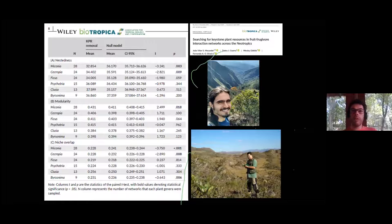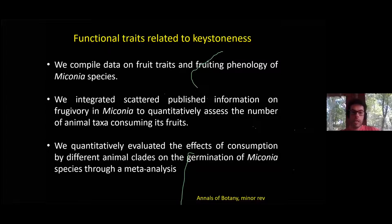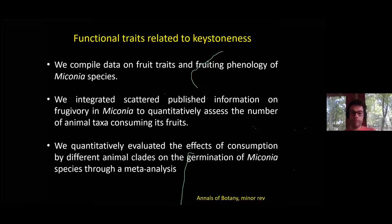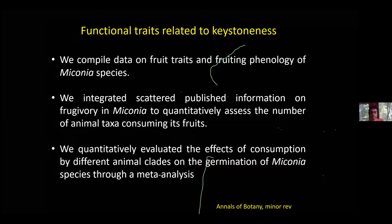Now that we have shown that Miconia is really the most important group of plants sustaining frugivores across the Neotropics, we wanted to know why they are so important. We reviewed the natural history of Miconia — it's a big group — and we tried to identify the functional traits related to the 'keystoneness' of Miconia. We compiled data from fruit traits and fruit phenology, integrated scattered information on frugivory in Miconia to provide the first assessment of the number of animals that eat Miconia fruits. We also evaluated the effects of gut passage on germination of Miconia species using meta-analysis.